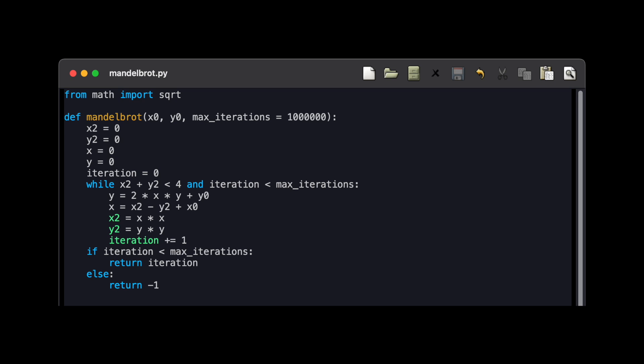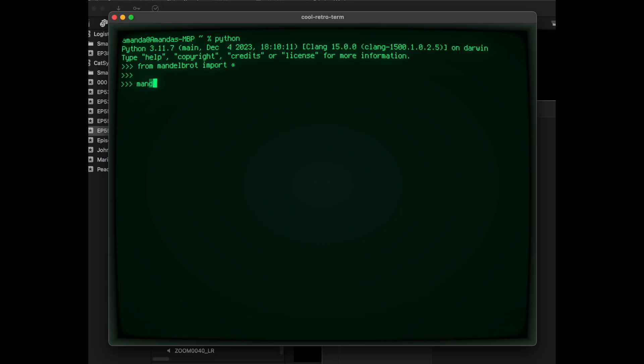We can write a simple Python program that will tell us if the quadratic map will converge, or if not, how many steps it will take for the absolute value to exceed 2. When we plug in 0, our function returns minus 1, meaning that 0 is in the Mandelbrot set.